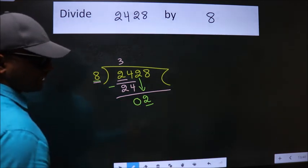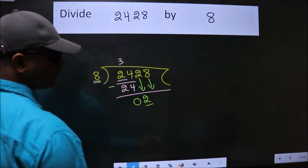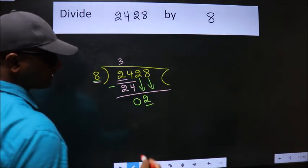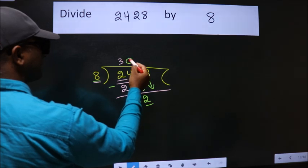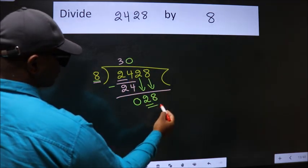So we should bring down the second number. And the rule to bring down the second number is: put 0 here. Then only we can bring down this number. So 28.